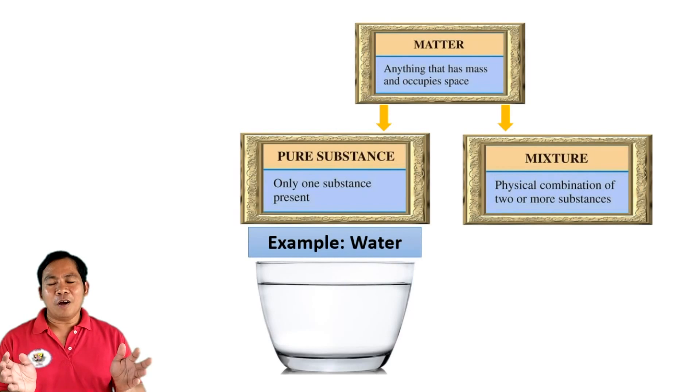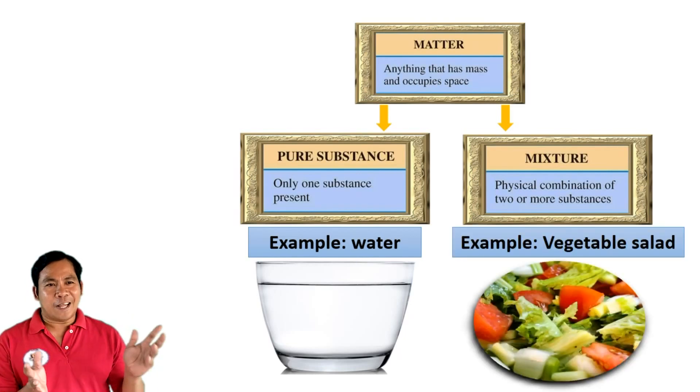An example of pure substance is water. An example of mixture is vegetable salad.